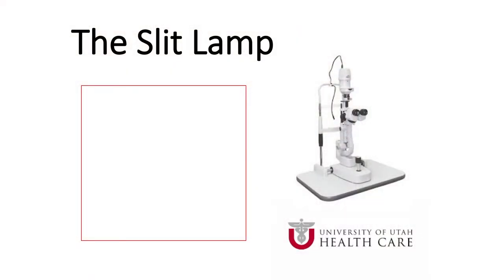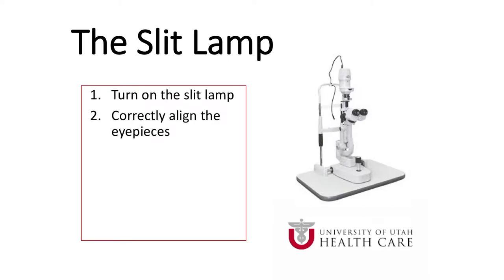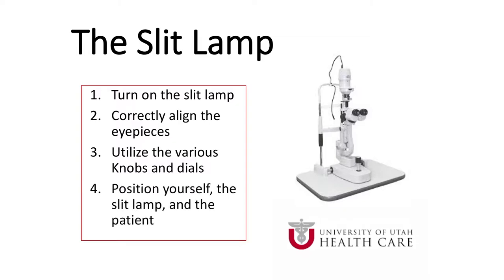First we will give a brief overview of the slit lamp, which is an instrument consisting of a high-intensity light source that can be focused to shine a thin sheet of light onto the eye. We will first show you how to turn on the slit lamp, how to correctly align the eyepieces, and how to utilize the various knobs and dials. Finally we will show you how to position yourself, the slit lamp, and the patient comfortably.